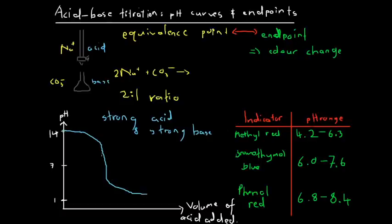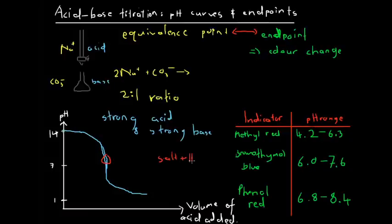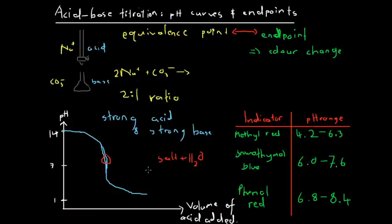We can see that the equivalence point is around the middle of that sharp drop. When we react a strong acid with a strong base, we produce a salt and water. When the reaction has gone to completion, neither the strong acid nor the strong base is present in excess, so the only thing in solution is salt and water — meaning the pH is going to be 7, it's going to be neutral. Therefore, the pH at the equivalence point is 7.